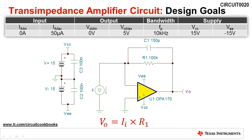The design goal for this circuit is to convert an input current that ranges from 0 to 50 microamps to an output voltage that ranges from 0 to 5 volts. The frequency of the input signal is 10 kilohertz. Finally, a dual 15-volt supply is used because it removes the need for biasing at the non-inverting input.